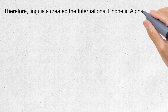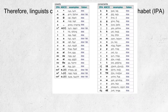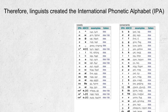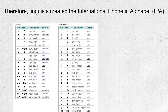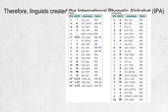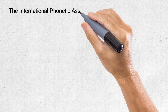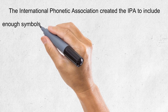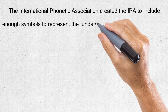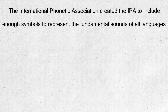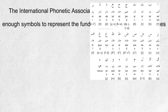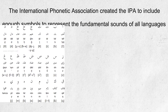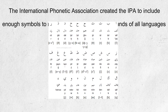Therefore, linguists created the International Phonetic Alphabet, or IPA. This alphabet helps us identify all the sounds in different languages. The International Phonetic Association created the IPA to include enough symbols to represent the fundamental sounds of all languages — here's Arabic as an example — giving a standard alphabet across all languages.